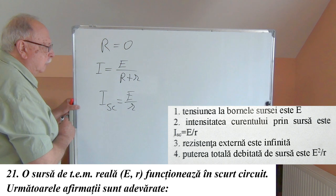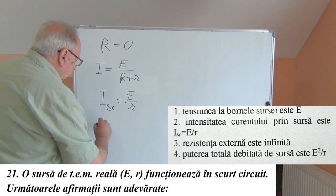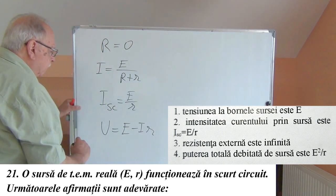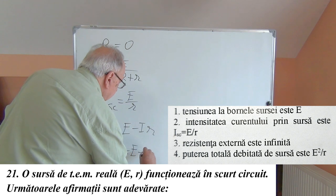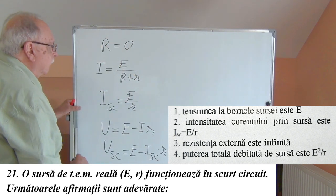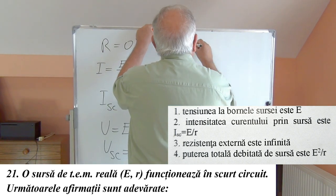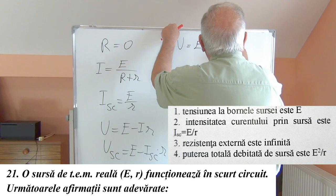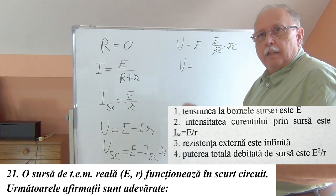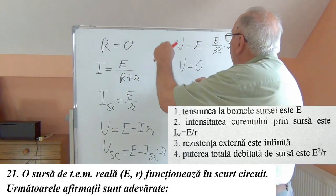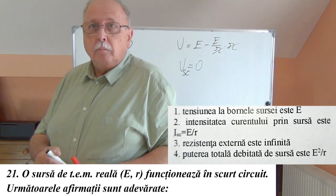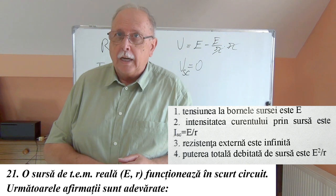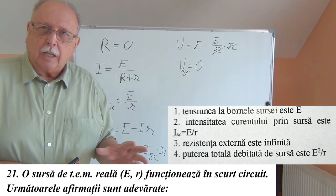The short-circuit current is E / R_small. The terminal voltage can be calculated as E minus I·R_small. At short circuit: voltage = E − (E/R_small)·R_small = E − E = 0. So the terminal voltage at short circuit is zero. Answer variant 1, which says the terminal voltage is E, is incorrect.